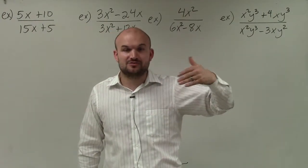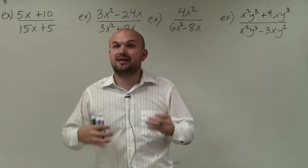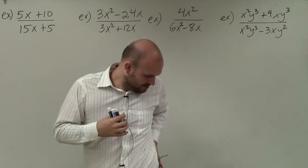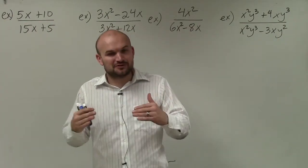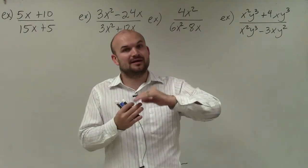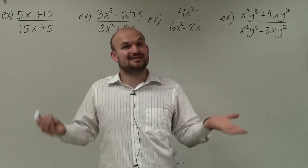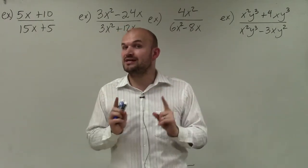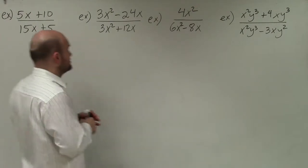When simplifying rational expressions using factoring, the main important thing is knowing how to apply the division property. Besides knowing how to factor, we need to understand that when we have terms that are exactly the same in the numerator and denominator, they divide to 1, as long as they are separated by multiplication. I'll explain that as we get through the problems.